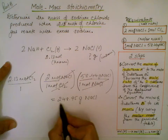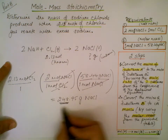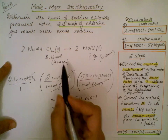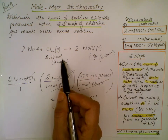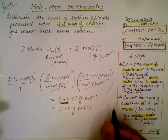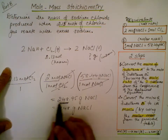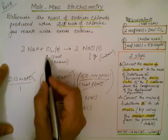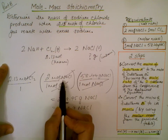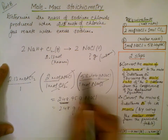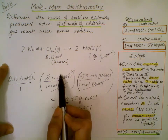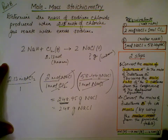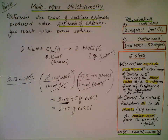We have 3 significant figures, so the answer is 248 grams of sodium chloride produced from 2.13 moles of chlorine. To review: we converted moles of substance A to moles of substance B using the mole ratio, then converted moles of substance B to mass of substance B using the molar mass — moles to moles to mass. Practice as much as possible. Thank you for watching.